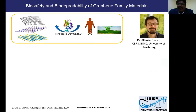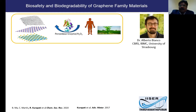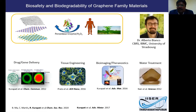Our agenda covers the biosafety and biodegradability of graphene family materials, including other 2D materials such as hexagonal boron nitride and molybdenum disulfide. These materials are heavily studied for applications including drug delivery, gene delivery, biosensing, imaging, water treatment, and tissue engineering — which is why it's important to understand their degradation behavior.